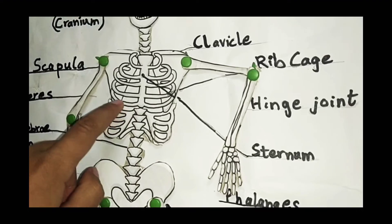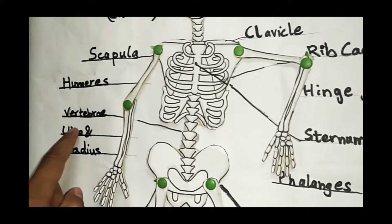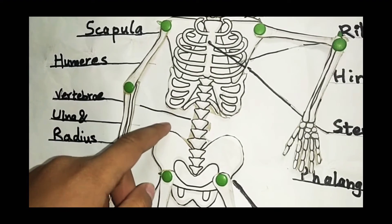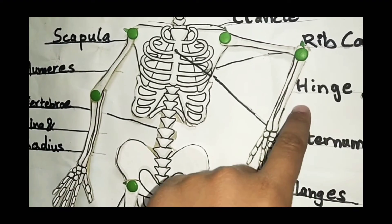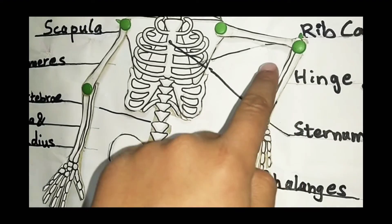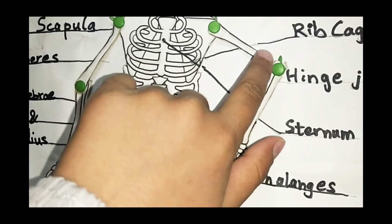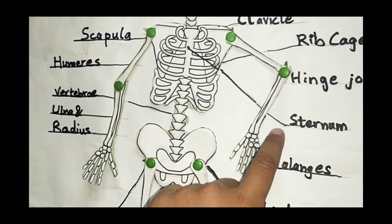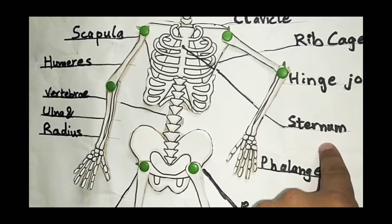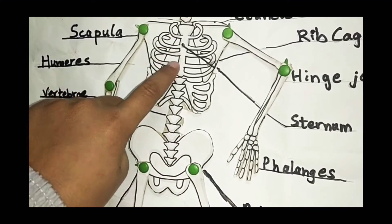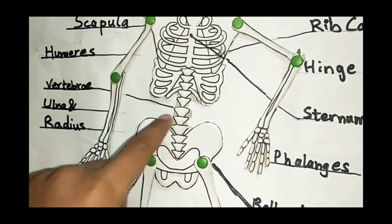Vertebra is the backbone. Hinge joint is this joint of the elbow. The sternum is what connects the rib cage in the middle.